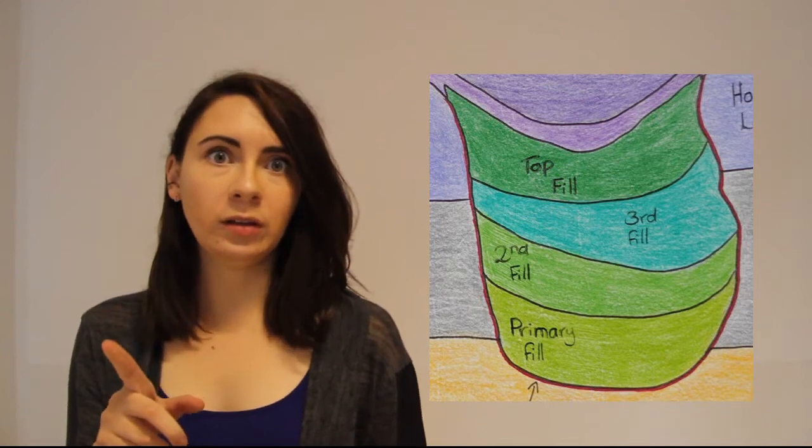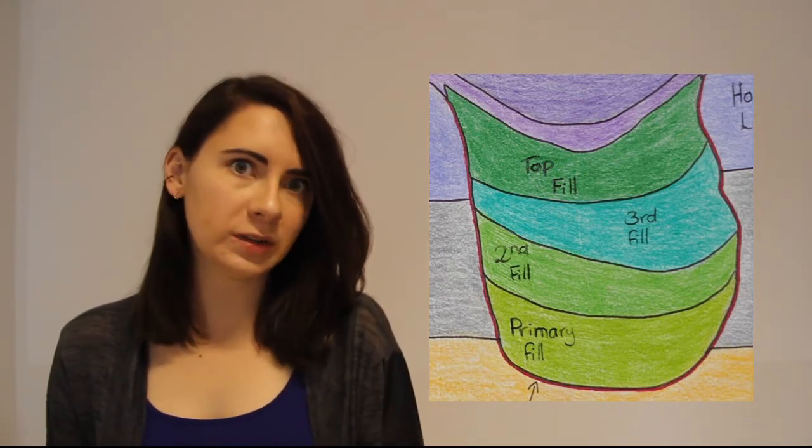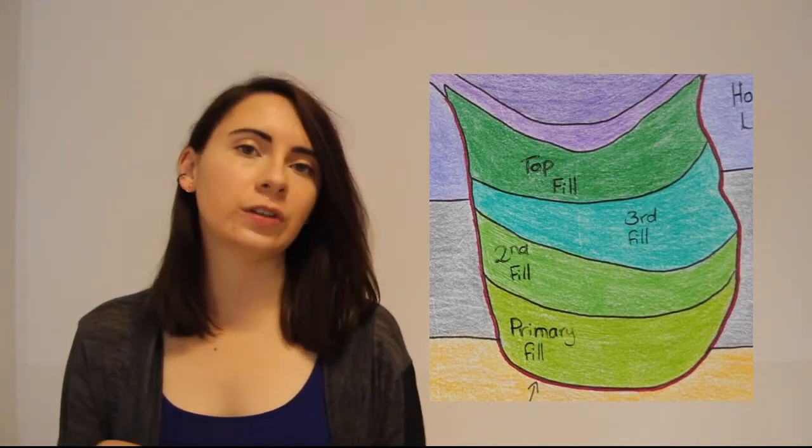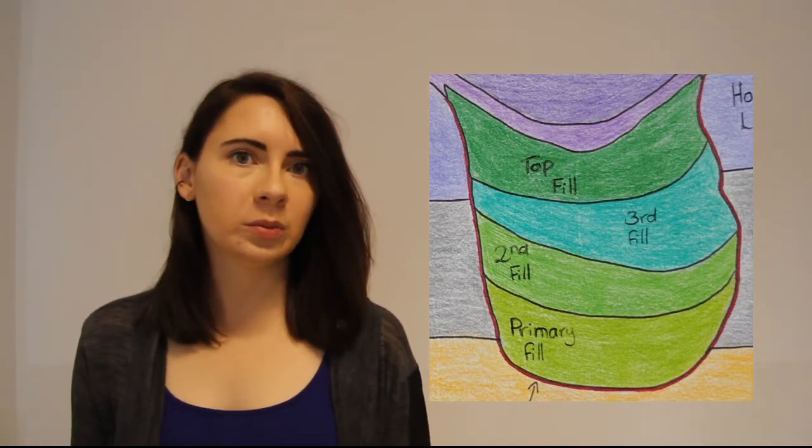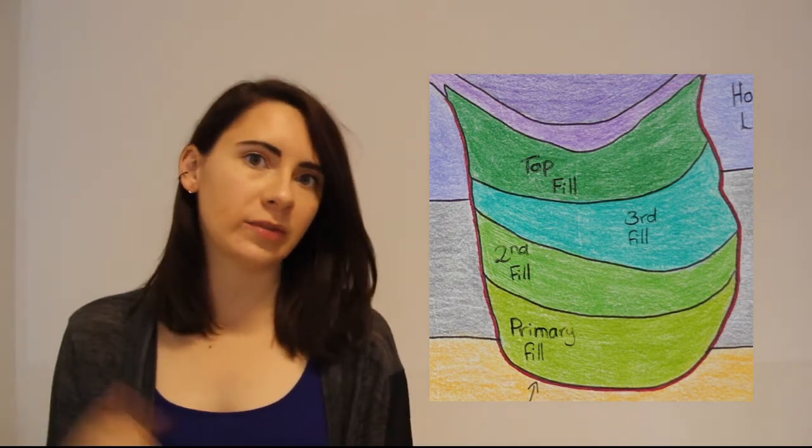So you normally have the primary fill which is just the normal debris that accumulates right after the feature or the cut has been formed. This is before anything intentional is placed inside of it. But a natural buildup of debris can also mean that a feature is falling into disuse. And all the other layers kind of just build up on top of this.